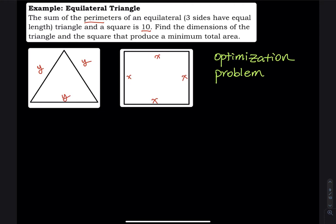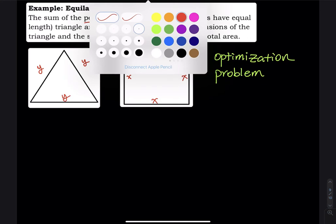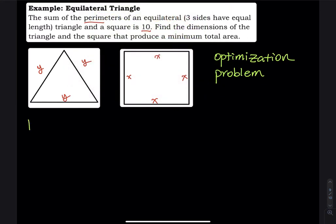We want to find the dimension of the triangle and the square that gives the minimum total area. Going back to the primary and secondary equation framework: we have one primary and one secondary. Since the problem asks for total area, the primary must be the area equation, and the secondary must be the perimeter equation.